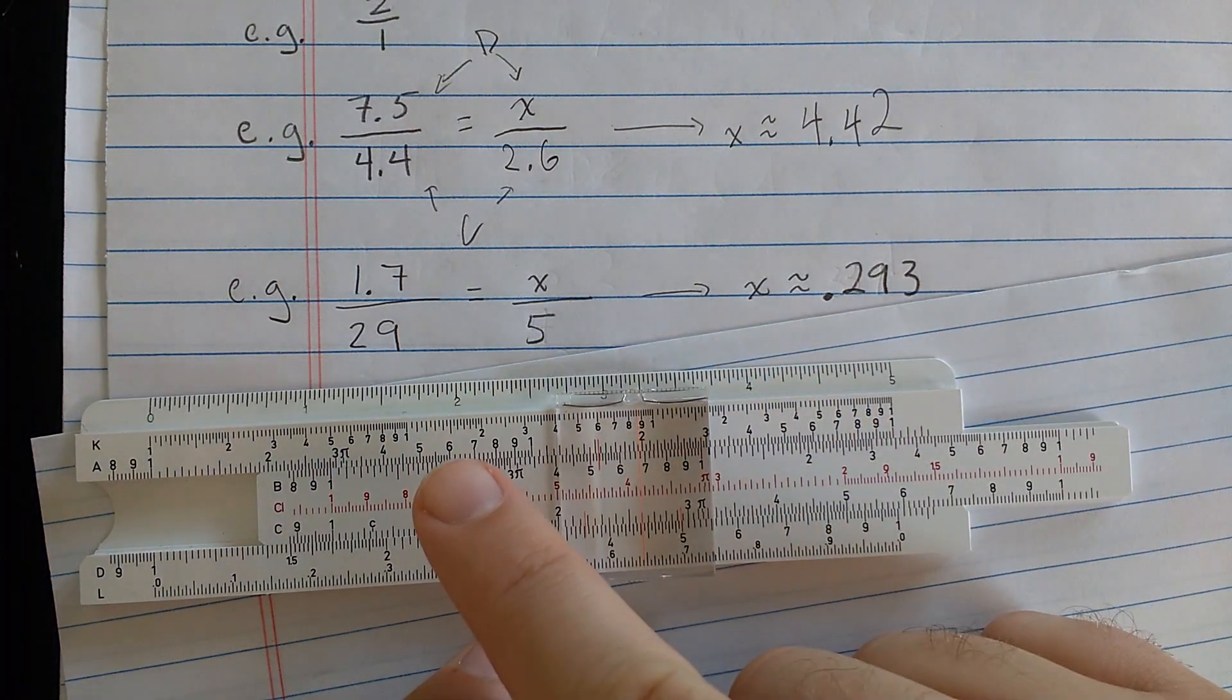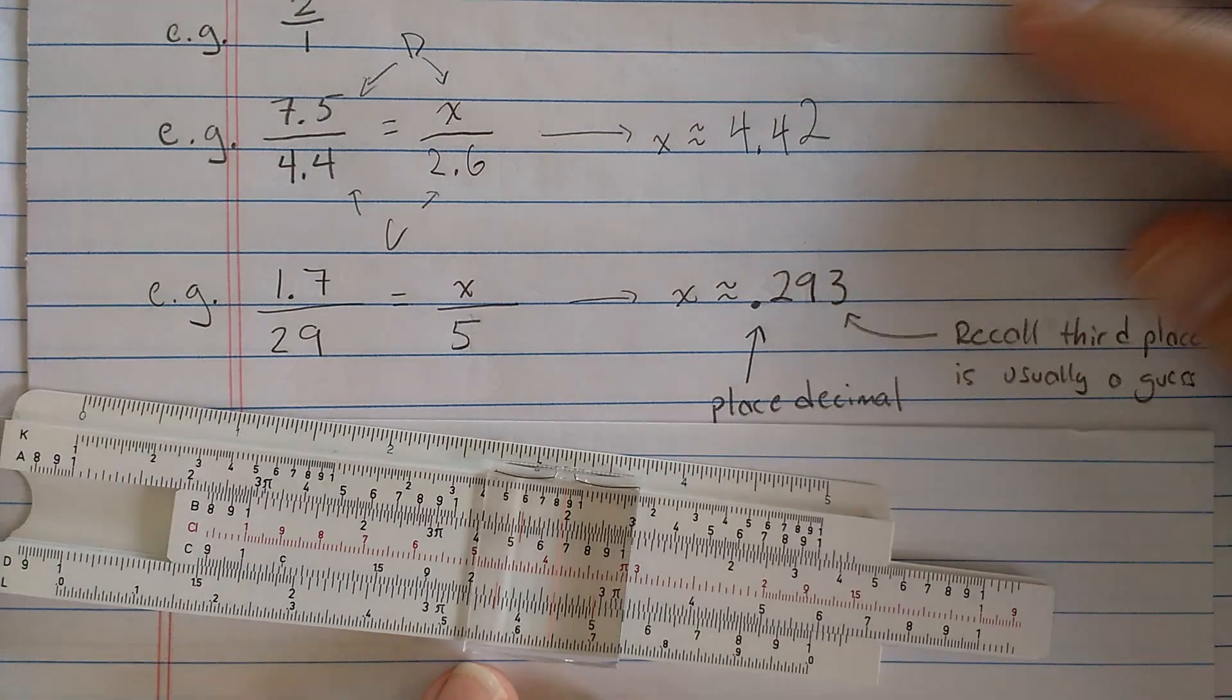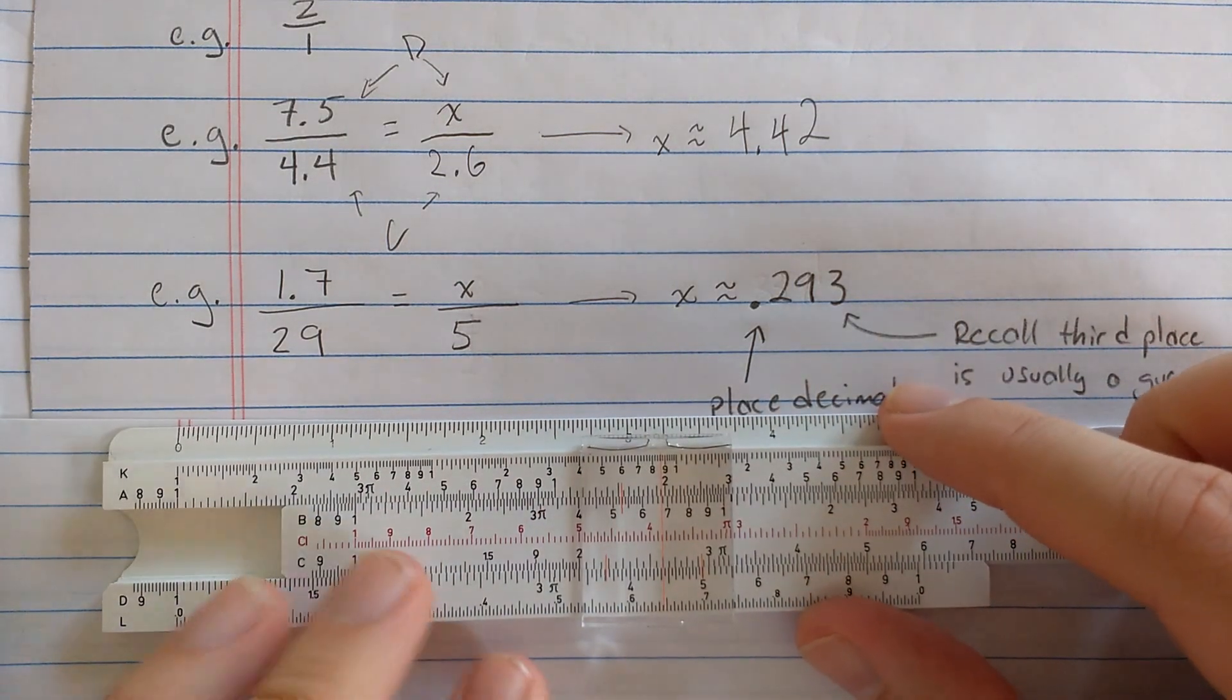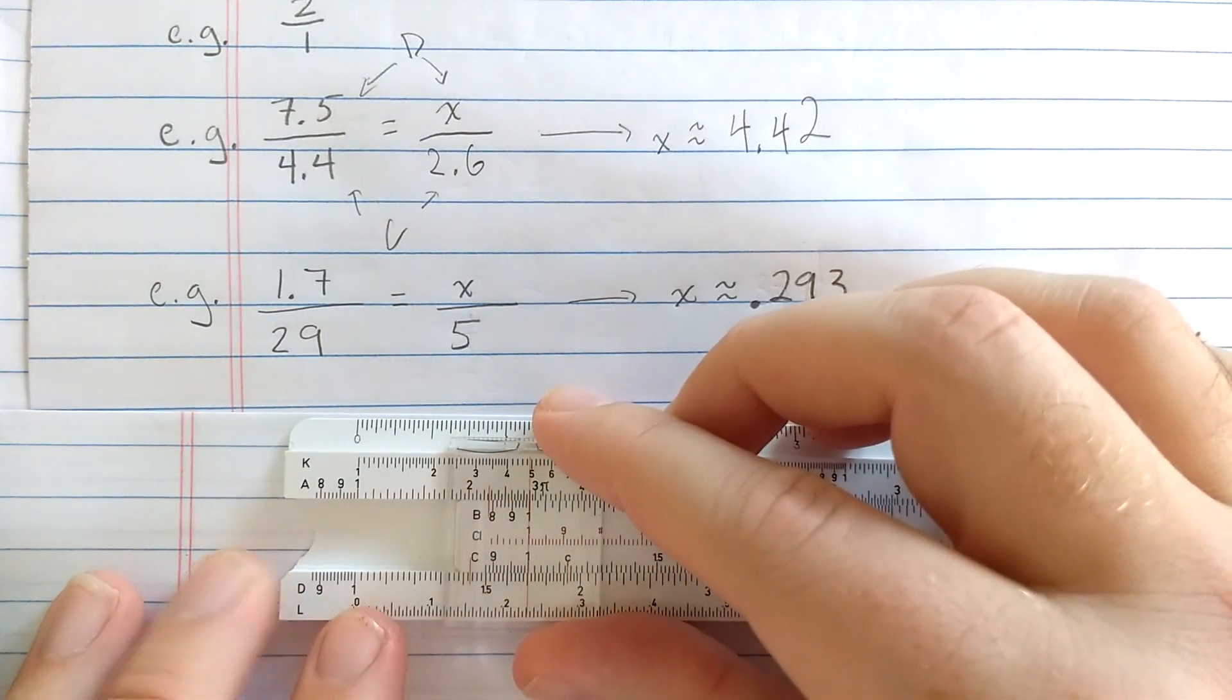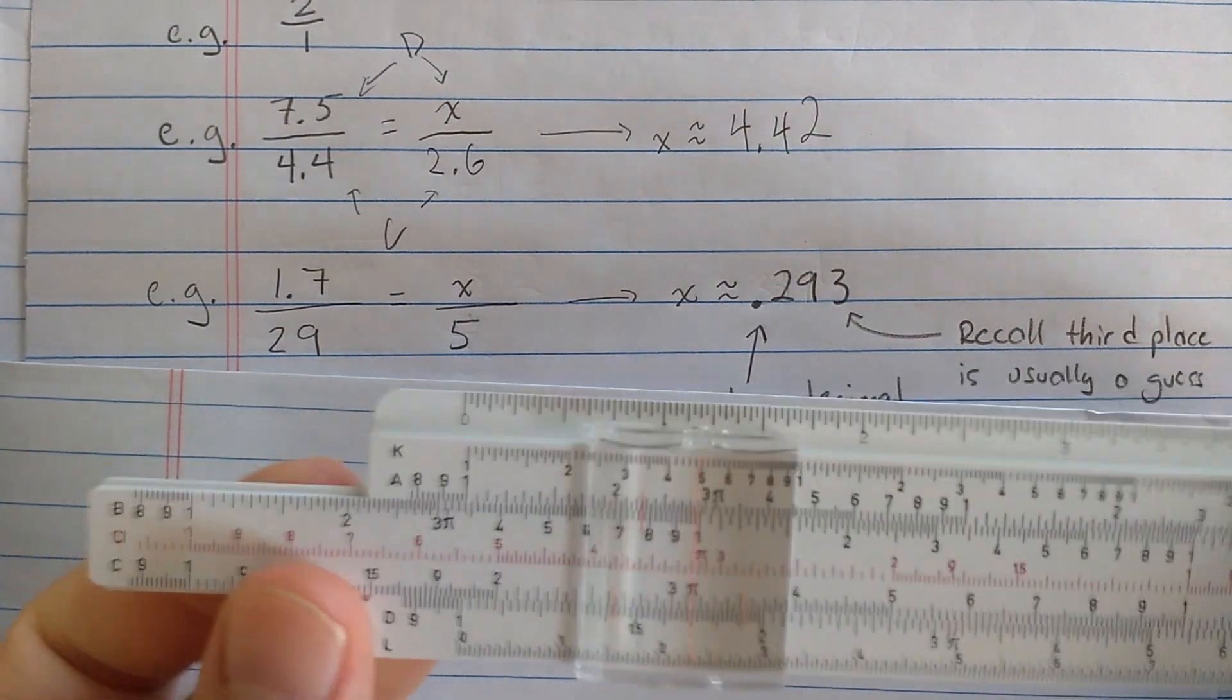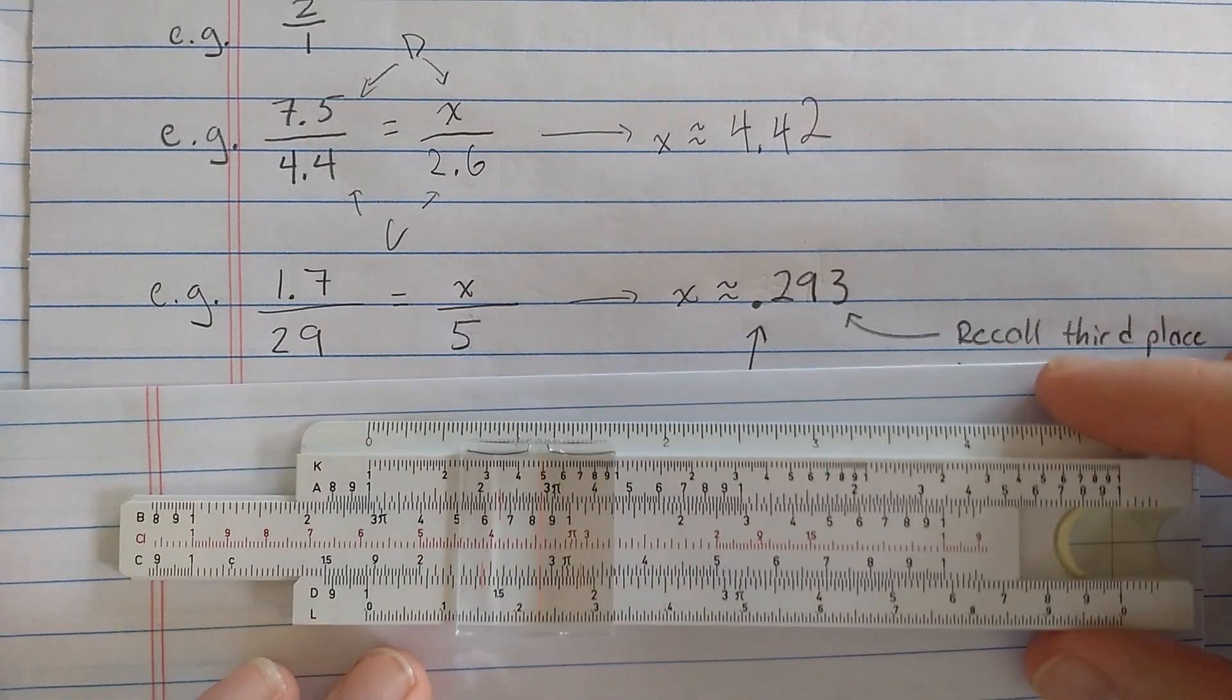So say I have 1.7 over 29 equals x over 5. Okay, I guess I'm revealing the result here. So let's just go with it. How would I solve this? Okay, so I would set ratio 1.7 to 29. Of course, I'll set that as 2.9. So here, I'll first find 1.7 here on the D. Then I'll find 29 on the C scale. About there. Align to those.